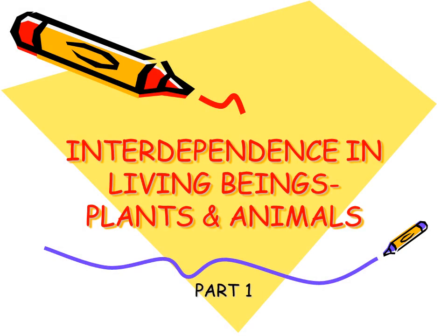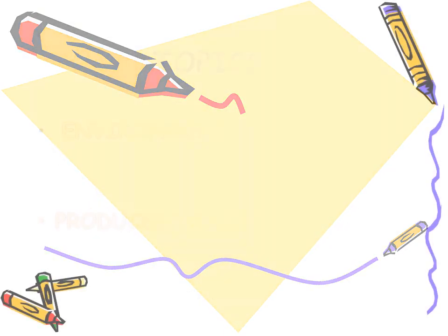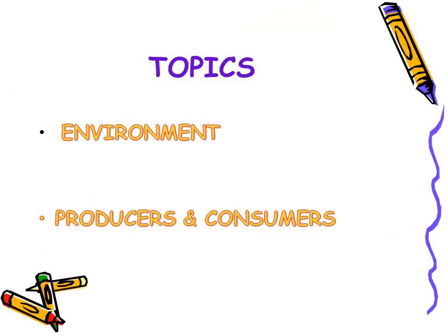Hello students, welcome back. I hope all of you and everyone in your family is fine. Today we will start with the second chapter of your syllabus: interdependence in living beings, i.e. plants and animals. The topics I will cover today are first, environment, and second, producers and consumers. We will know their definitions and types.